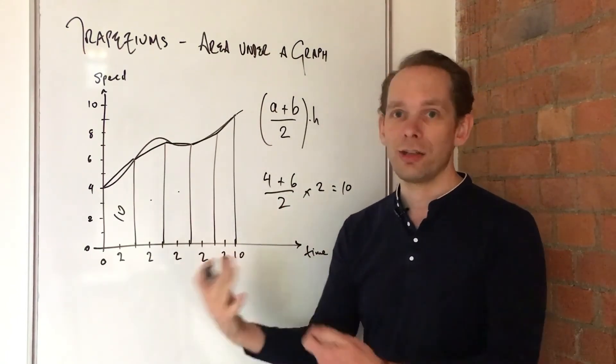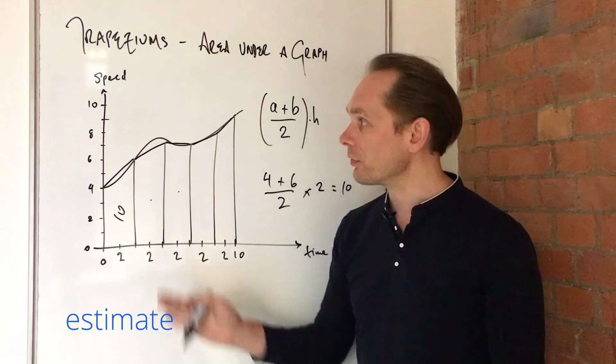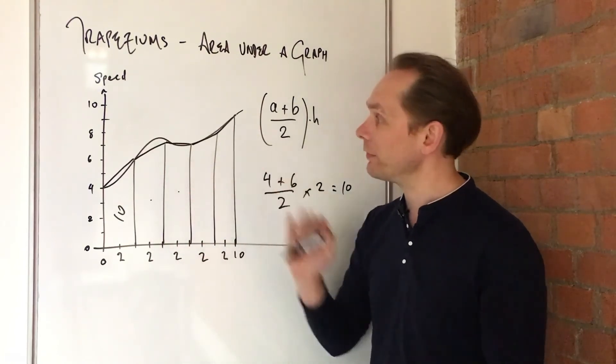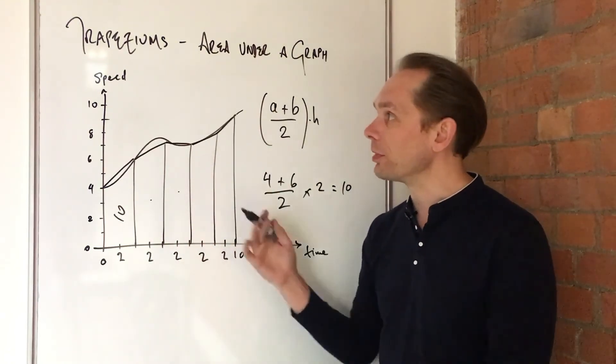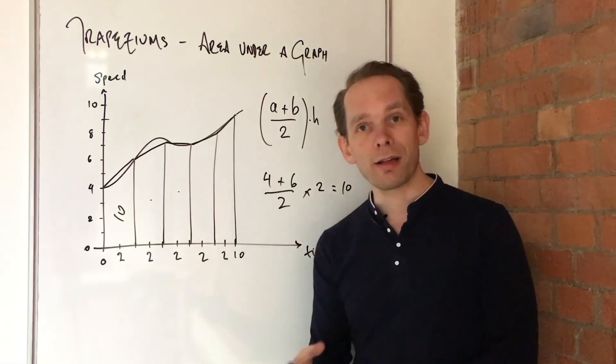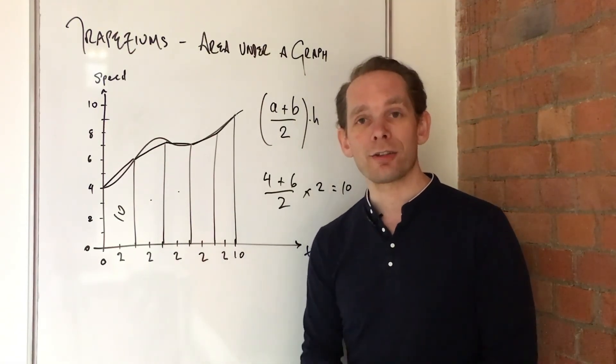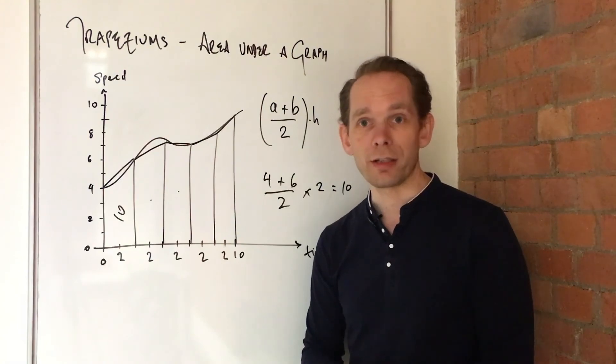And you could carry on working out all five of these trapeziums. You'll get five areas. You add them together. That's it. Done. You've got an estimate, only an estimate, for the area under the curve. In this case, the distance travelled by this object. So hope that was helpful. Thanks very much for watching. Give that a try, and hope you find it useful. Bye.